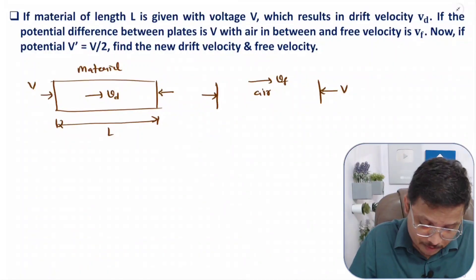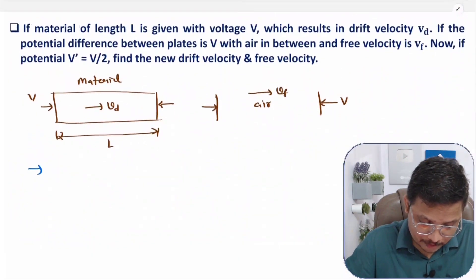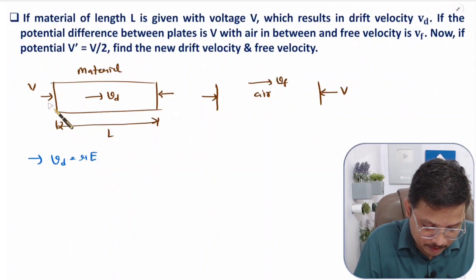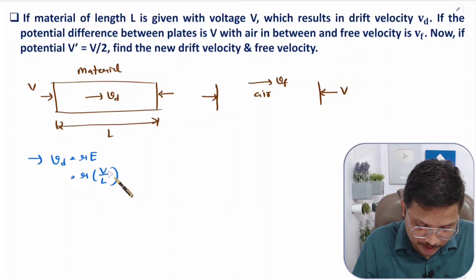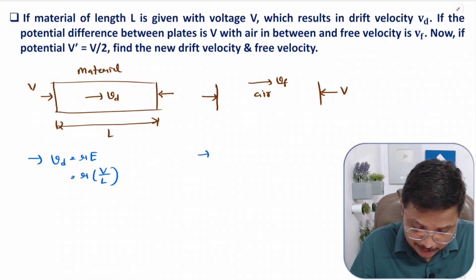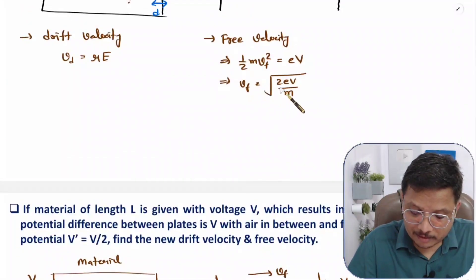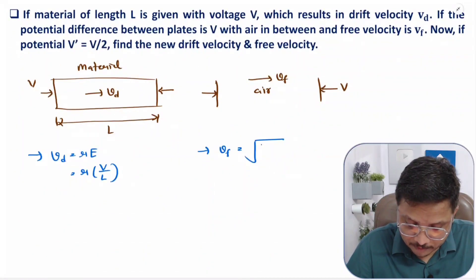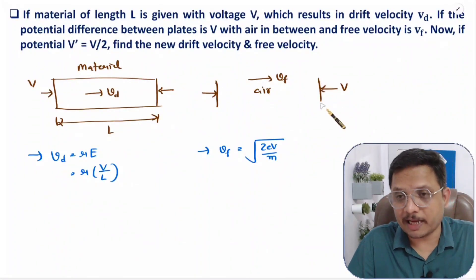As explained, drift velocity vd equals mobility mu times electric field, and electric field in terms of potential is voltage by distance, so vd equals mu times V by L. For free velocity, it is the square root of 2eV by m, where V is the potential applied between the two plates.